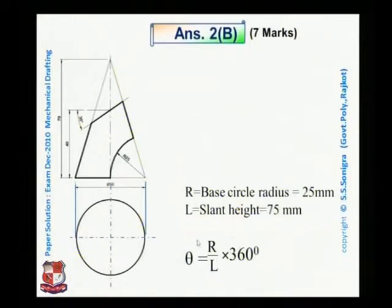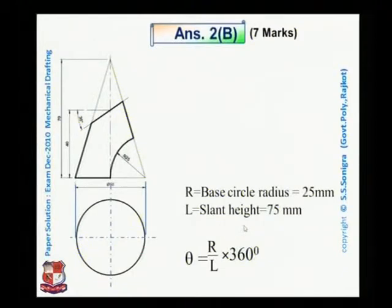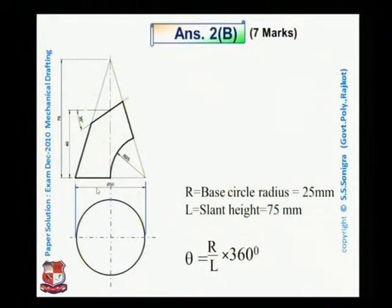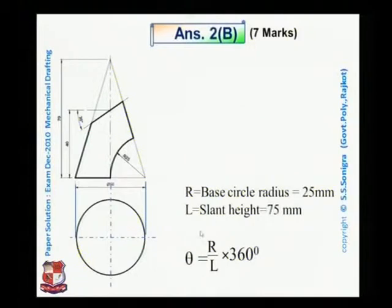Now to draw its development, the equation is: θ = (r / l) × 360°, where r is the base circle radius — that is 25 mm (since diameter is 50 mm) — and l is the slant height or true length of the slant edge of this cone. The height is 70 and the slant edge length is 75 mm. Substituting: r = 25, l = 75, so 25/75 = 1/3, and 1/3 × 360° = 120°. So θ = 120°.